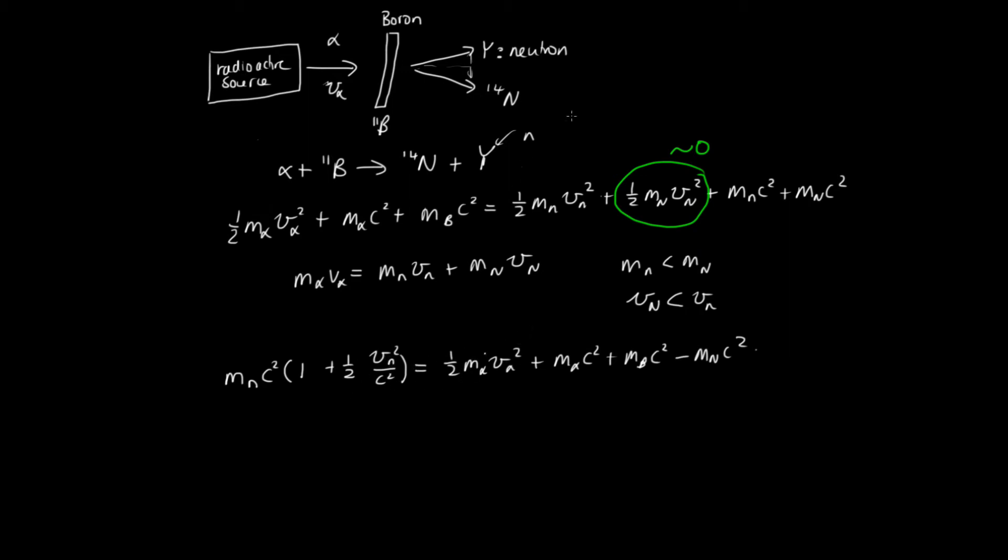So James Chadwick, being a clever person, decided to slam these neutrons into different types of gases. In particular, he tried hydrogen gas, which is basically just proton nucleides. He slammed this neutron into stationary protons, and he could then measure the speed of the protons. From the speed of the proton, he was able to work out the speed of this neutron here. So now everything in this equation was known, apart from the rest mass of the neutron, which was what he was trying to measure.